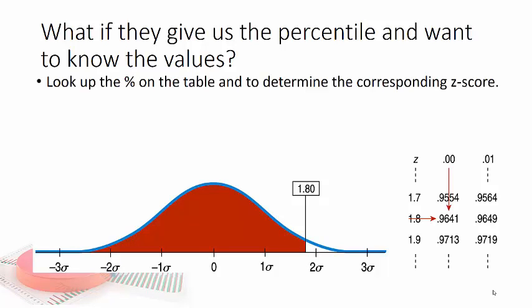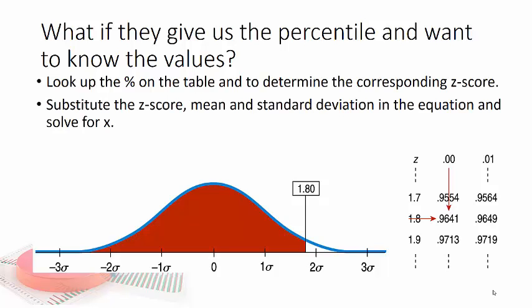I'm just using the same picture we had from before. So what we would do is instead of looking up the z-score on the table, we'll look up the percent on the table and substitute the z-score, the mean, and the standard deviation in the equation to solve for x. That sounds like a lot.